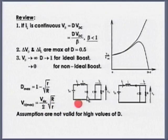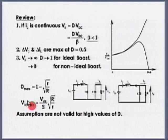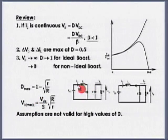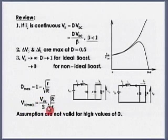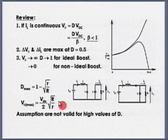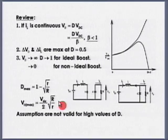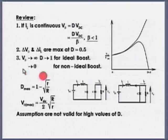For high values of D, we need to take the non-idealities into account. We found that if we take the inductor resistance into account, the maximum output voltage V_naught_max is given by a specific equation. The maximum ratio generally obtained in a boost converter could be of the order of 7 to 10, and that too using an inductor with a very high Q. The output is a strong function of the quality factor of the inductor.